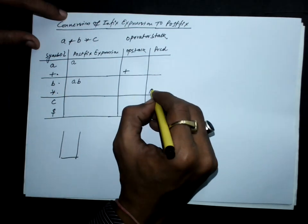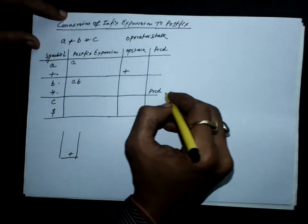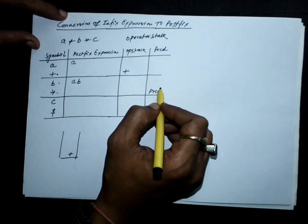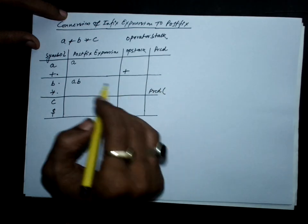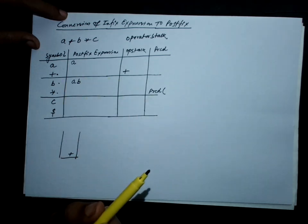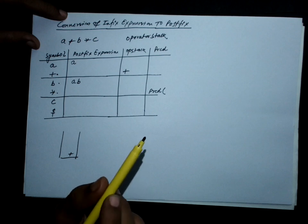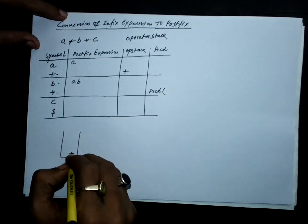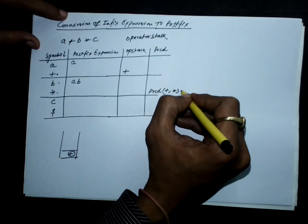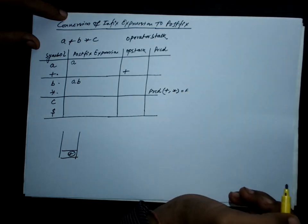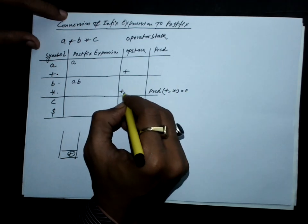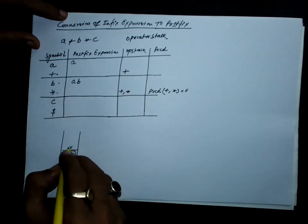When we encounter the next operator, we check the precedence. Since the stack is not empty, we check the precedence of the stack top — which is plus — over the incoming operator, which is multiplication. This precedence is false. The rule says if precedence is false, push the incoming operator on the stack. So plus was already there and we push multiplication on the stack as well.